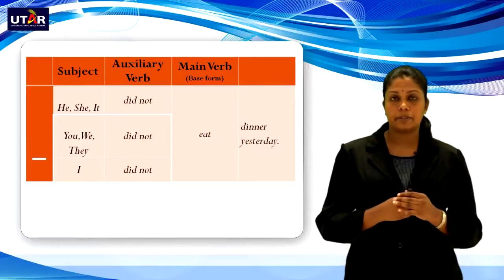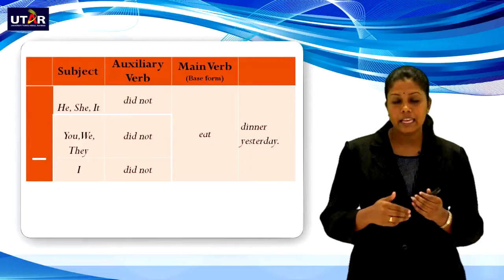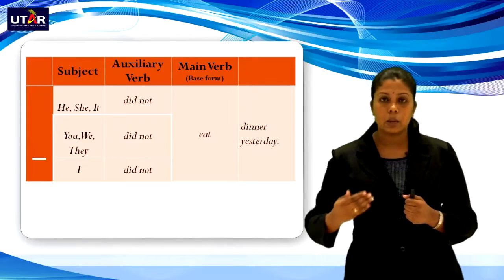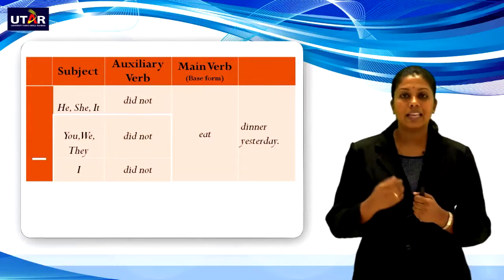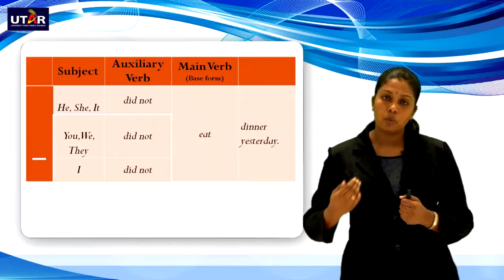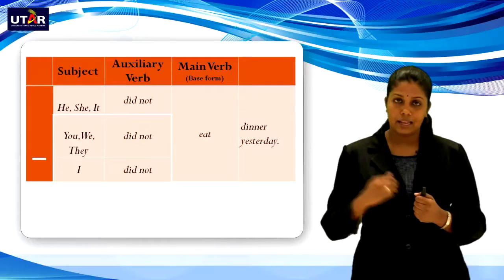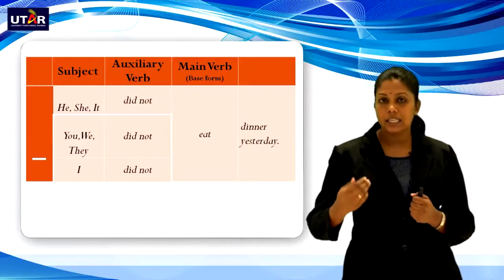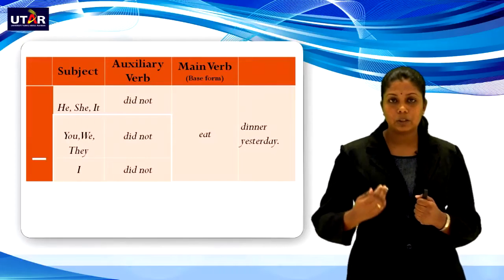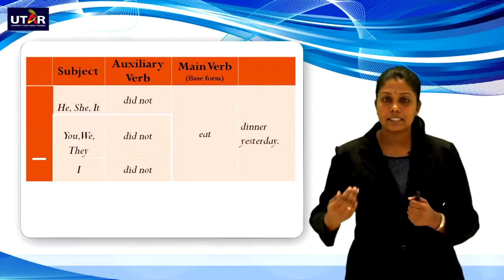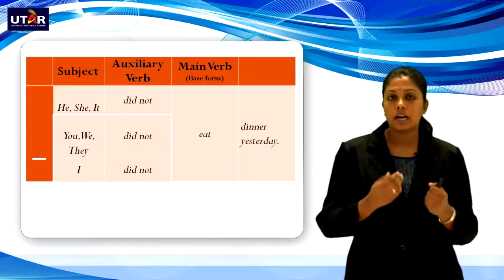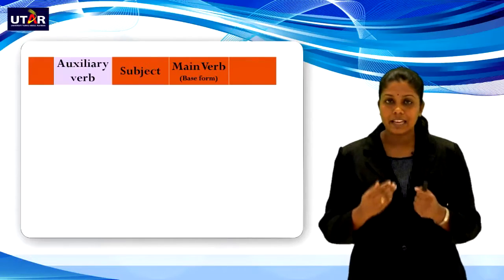Now let's look at the examples. Singular subjects he, she, it — did not eat dinner yesterday. Plural subjects you, we, they — did not eat dinner yesterday. And I did not eat dinner yesterday. All these sentences are in negative form.